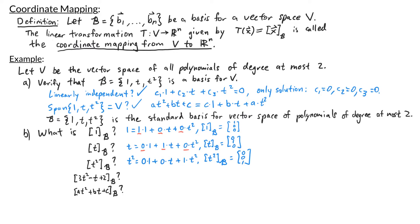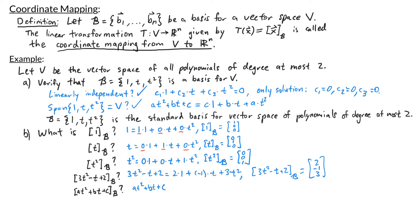Next, the b-coordinate vector for 3t² − t + 2. Writing it as a linear combination: 3t² − t + 2 = 2·(1) + (−1)·t + 3·t². So the b-coordinate vector is [2, −1, 3]. Lastly, for the general polynomial at² + bt + c: it equals c·(1) + b·t + a·t², so the b-coordinate vector is [c, b, a].